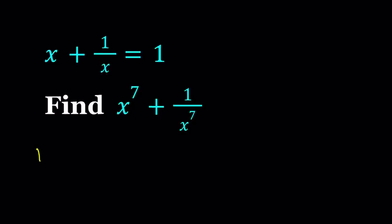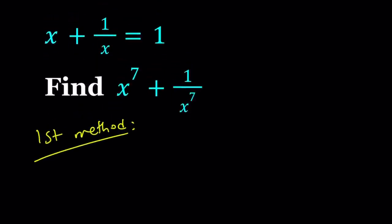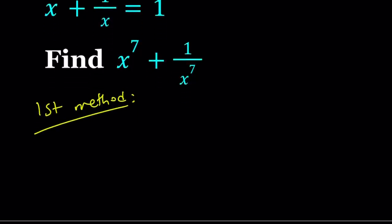First method. My first method is basically looking at this expression. I want to get to the 7th power. Obviously, you can raise both sides to the 7th power—that will be the fourth method. But you will get some other powers in the meantime. So I'm going to build up to the 7th power. First step: I'm going to take this and raise it to the 3rd power. I don't know why I start with the 3rd power, by the way, but it's kind of fun.